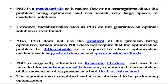PSO is a meta-heuristic as it makes few or no assumptions about the problem being optimized and can search very large spaces of candidate solutions. However, meta-heuristics such as PSO do not guarantee an optimal solution is ever found. Also, PSO does not use the gradient of the problem being optimized, which means PSO does not require that the optimization problem be differentiable, as is required by classical optimization methods such as gradient descent and quasi-Newton methods. PSO is originally attributed to Kennedy and Eberhart and was first intended for simulating social behavior as a stylized representation of the movement of organisms in bird flocks and fish schools. The algorithm was simplified and it was observed to be performing optimization.